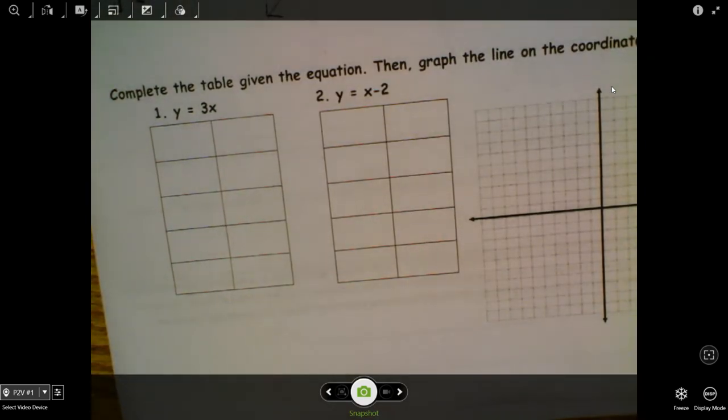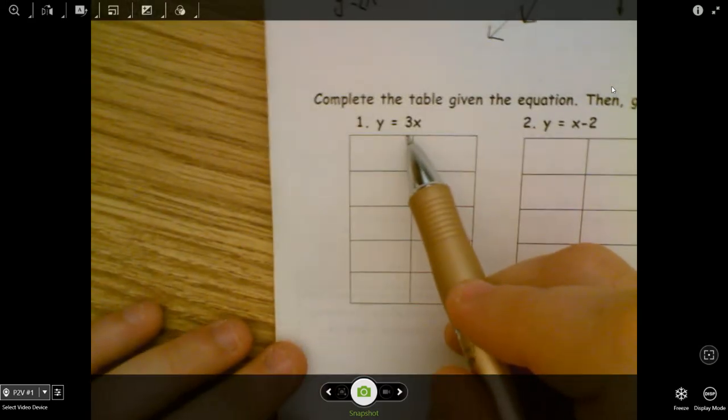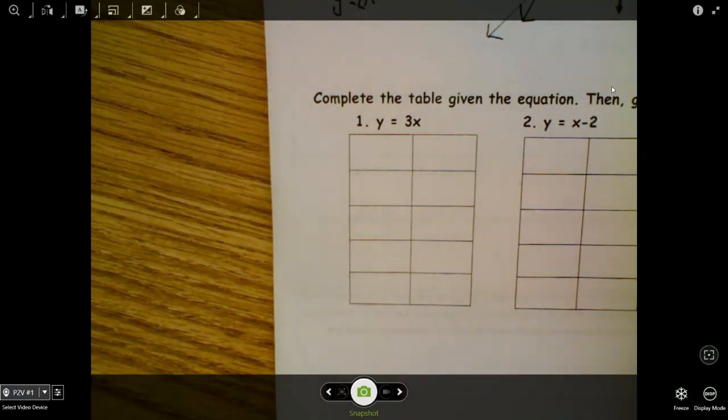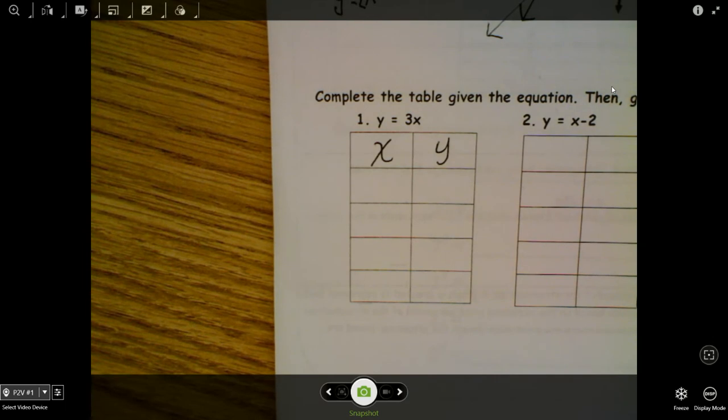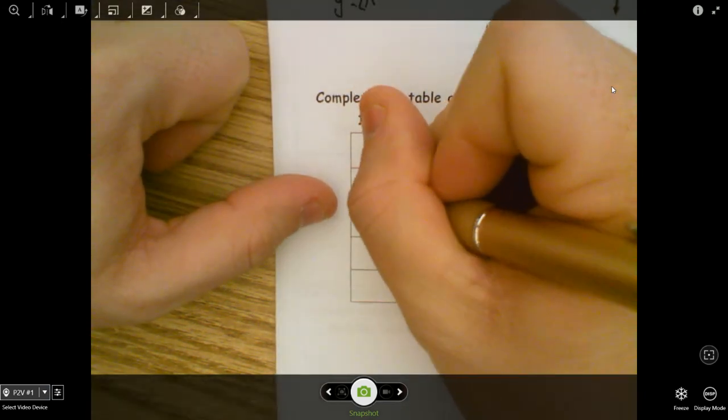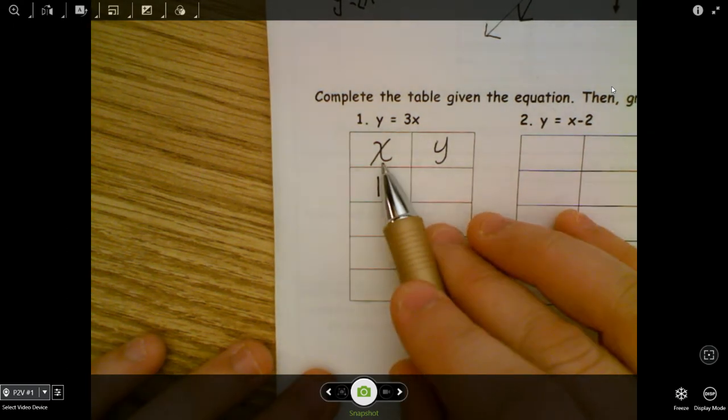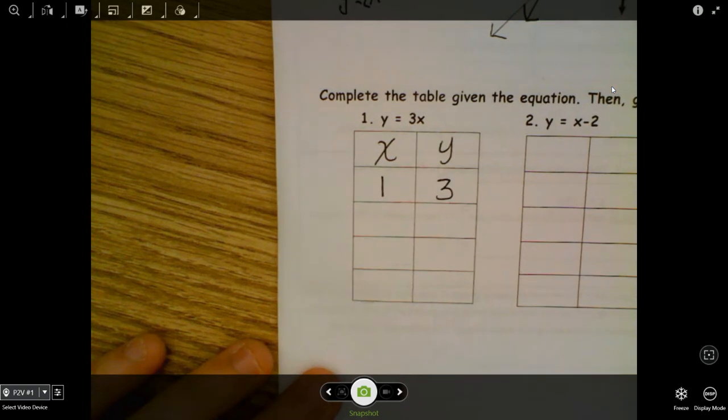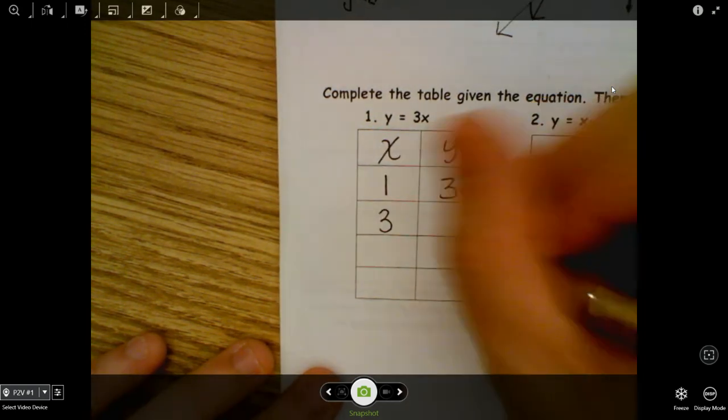Complete the given table and then graph. So the rule for this first table is 3X. And so we're going to do that. So this is our X side, our Y side. It always works like that. And you want to pick numbers that are going to fit onto the graph. So somewhere under 10 or under. Don't go huge. So say our X is 1. Our rule is 3 times X. So we do 3 times 1 is 3. Let's try 3. 3 times 3 is 9.